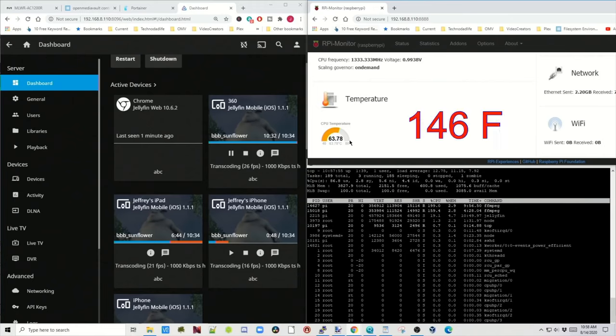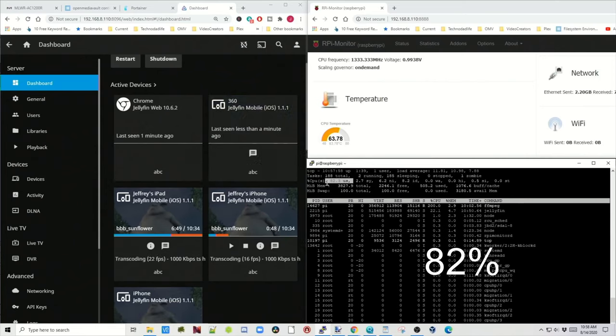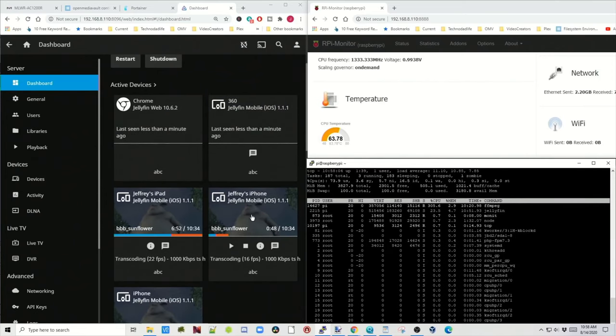I'm going to say that the maximum amount of videos you can transcode either 720p or 480p is 2. If we look at our CPU temperature, it's gone up to 63. CPU is at 82. Oh, it just went down because one movie just stopped. And you can see we're stopped transcoding this movie here.